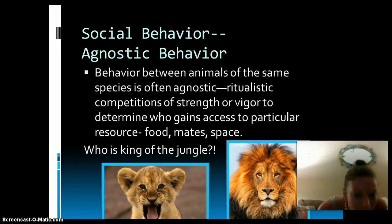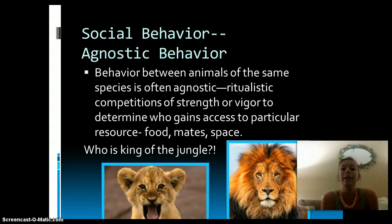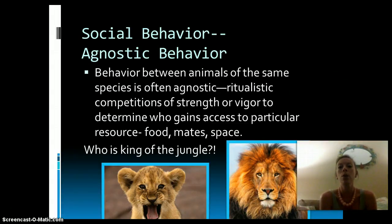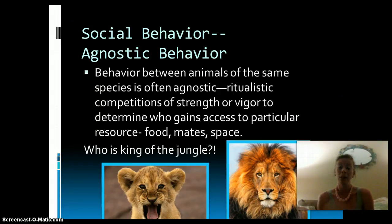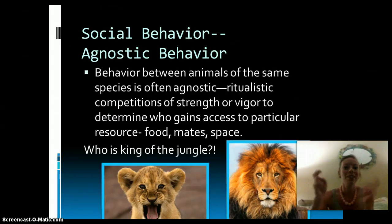The next one is social behavior. Agonistic behavior is going to be a behavior between animals of the same species — sometimes between other species — but it's a ritualistic competition of strength and vigor to determine who gains access to a particular resource, be it food, mates, or space. They can fight with each other; it could be the loudest roar. It is just some sort of competition between organisms to show who owns the particular territory or whatever they are looking for.